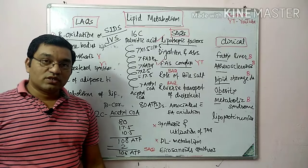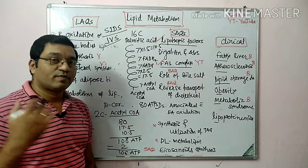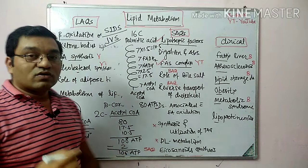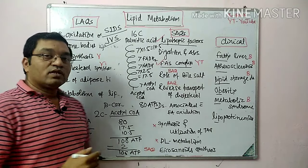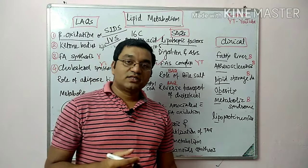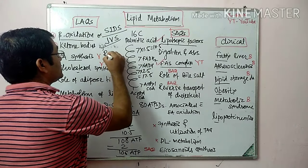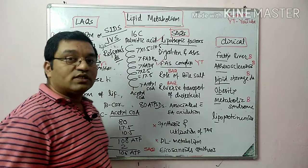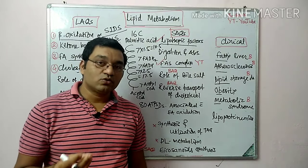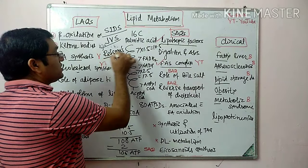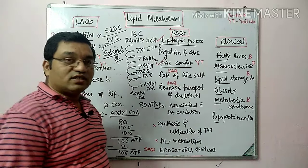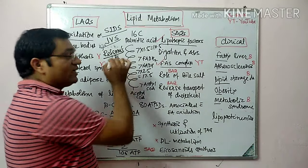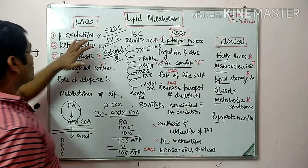Alpha oxidation involves oxidation at the alpha carbon with removal of a 1-carbon fragment. Alpha oxidation occurs in the brain in the endoplasmic reticulum. A blockade in alpha oxidation results in Refsum's disease, characterized by neurological symptoms and retinitis pigmentosa, caused by accumulation of phytanic acid due to deficiency of phytanic acid oxidase.